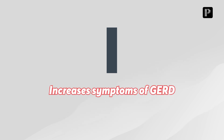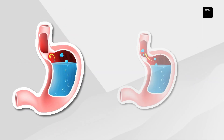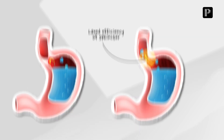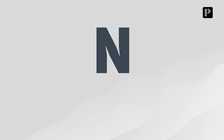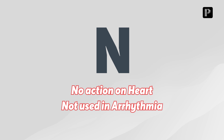Another I — increases the symptoms of GERD. The problem in GERD is there is a lax esophageal sphincter, and we know that calcium channel blockers can relax smooth muscle, relax the sphincter, and worsen GERD. The next letter N — these dipines don't have action on the heart, so no cardiac action, and these dipines are not used in arrhythmia.